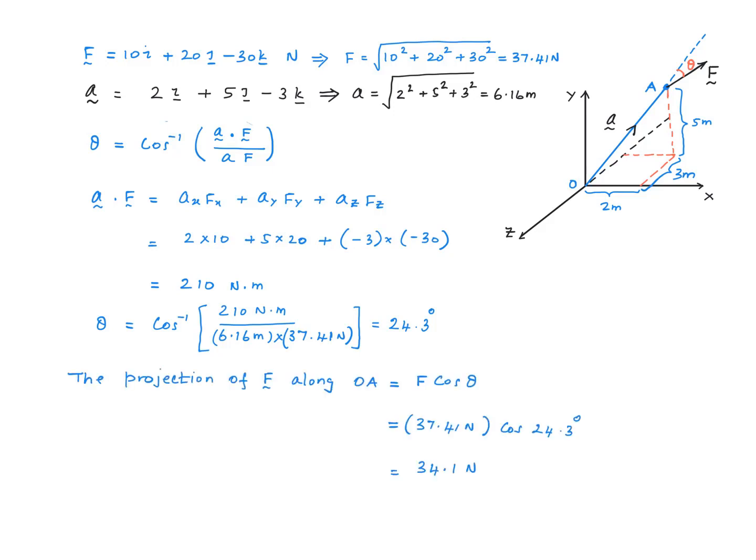Now we can answer the question. Projection of F along OA is F cosine theta. F is 37.41 N, theta is 24.3 degrees, and therefore the projection works out to be 34.1 N.